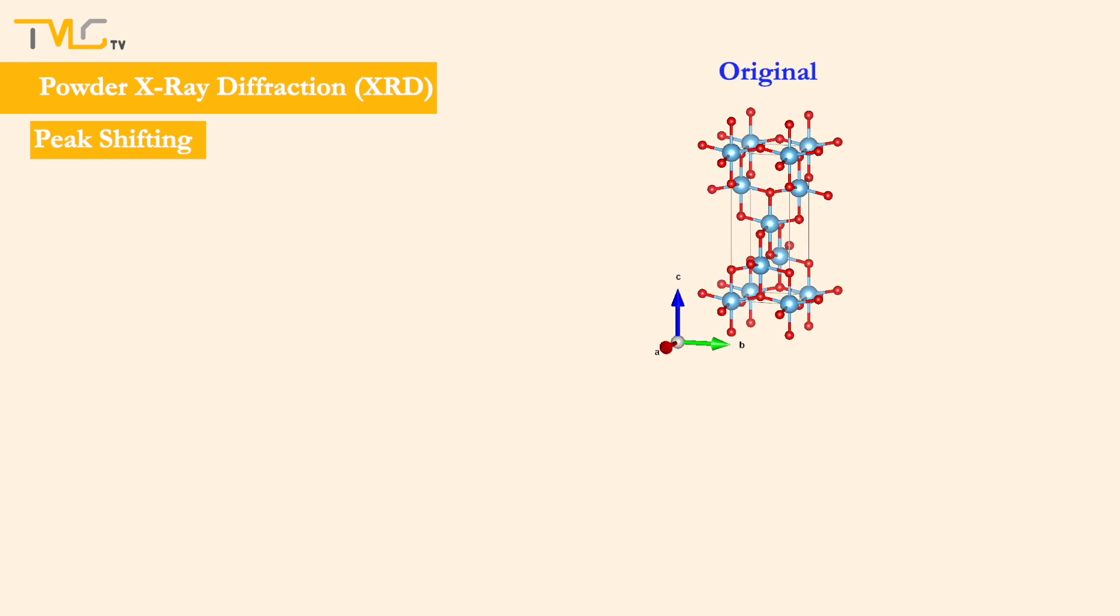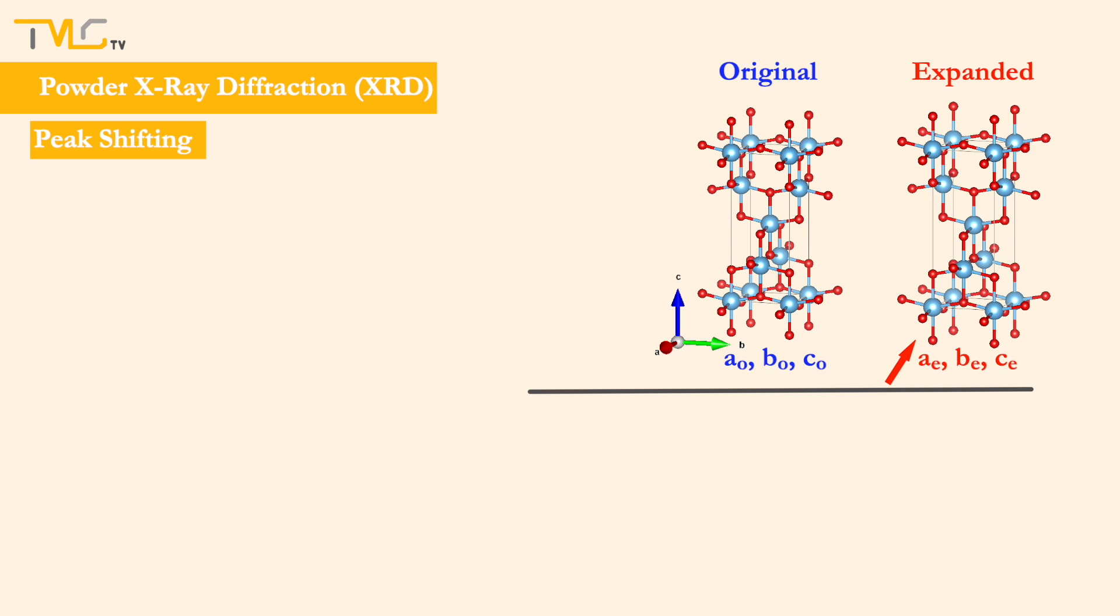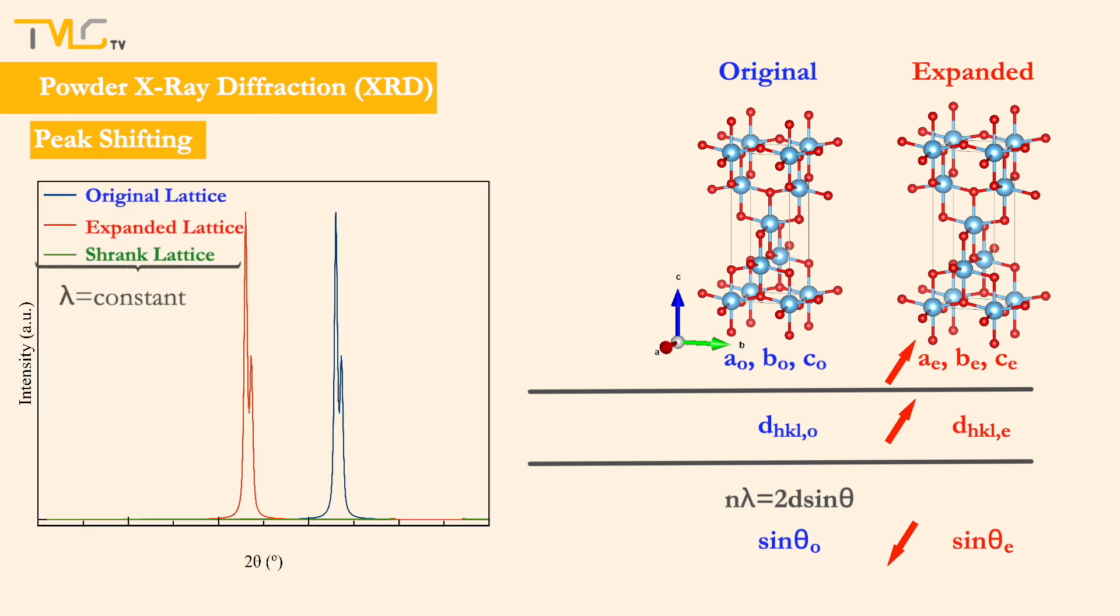Peaks may shift due to distortion of the lattices as a result of introduction of crystal defects such as vacancies and interstitials, or by changing the X-ray source. Let's start with lattice distortion under an X-ray beam with known wavelength. As the lattice expands, the lattice parameters will increase, leading to an increase in interplanar spacing of the selected crystal plane. As Bragg's law suggests, increasing interplanar spacing will proportionally decrease the sin θ value, which will reflect to the diffractogram by shifting the peak towards smaller 2θ values.